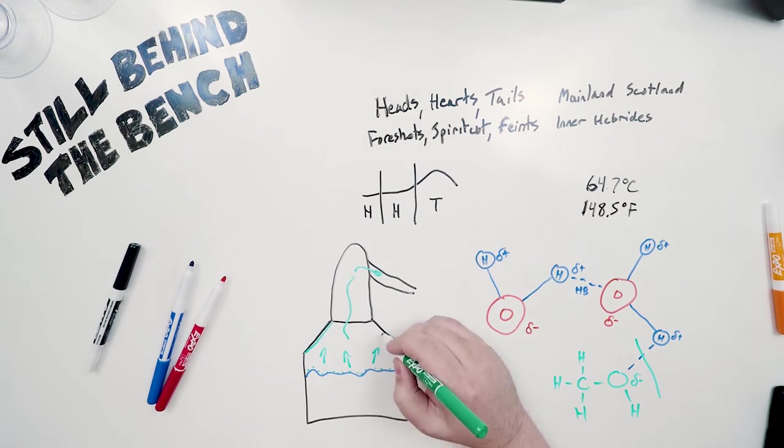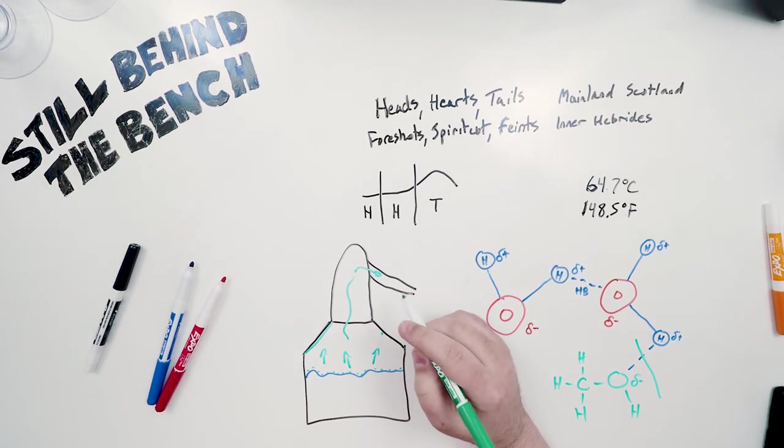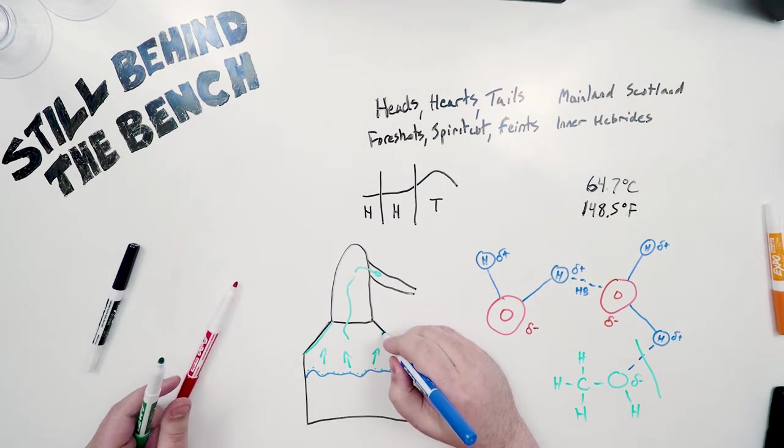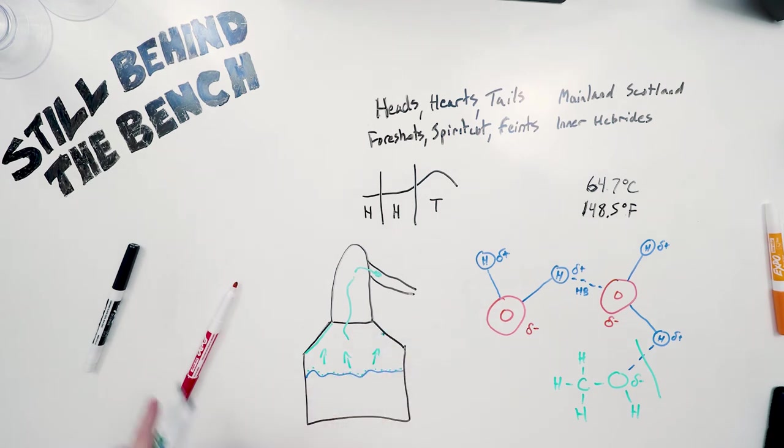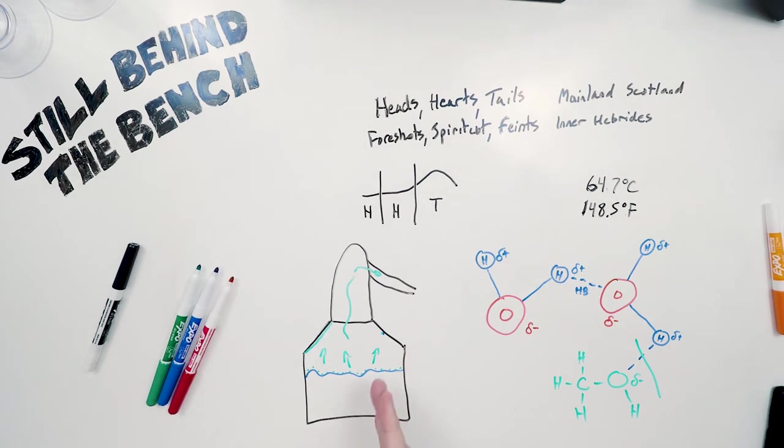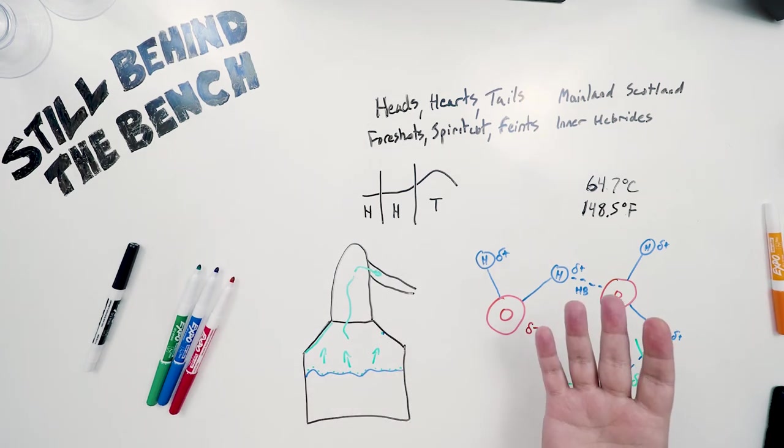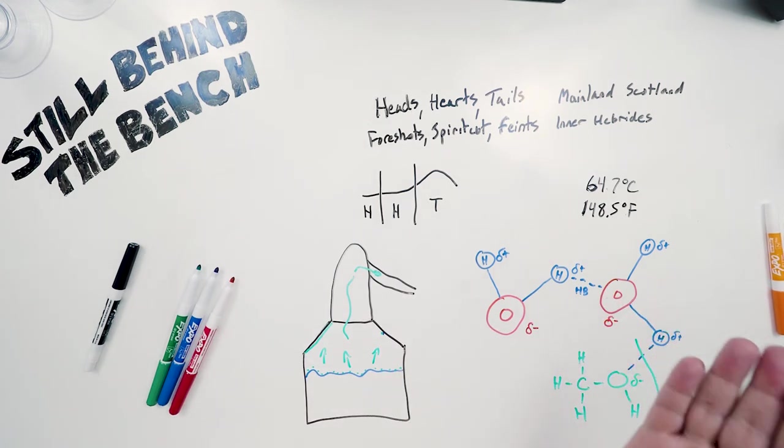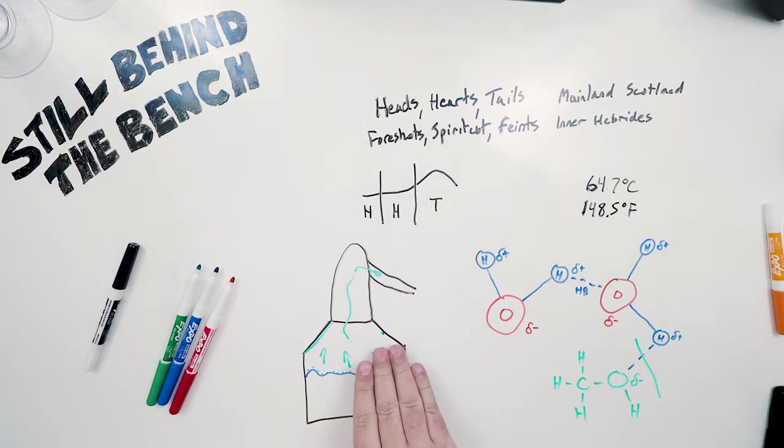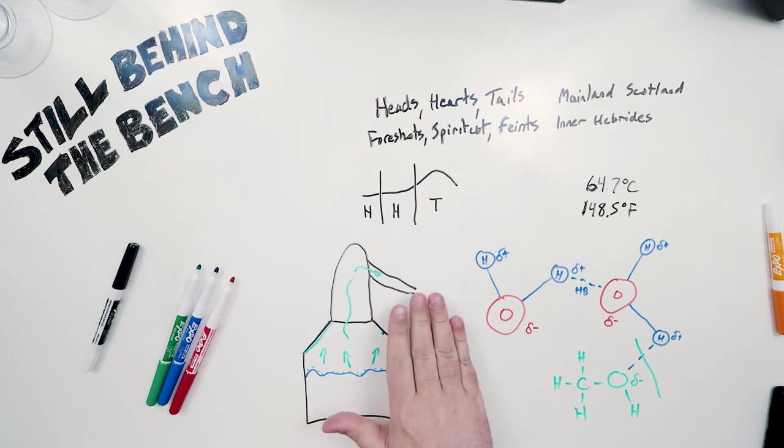Another thing that will happen is you'll have methanol and water mixing on the surface of the still and a bit of passive reflux will be happening. So the vapor coming up from the liquid will have a higher concentration of methanol and I'll get into why the vapor will have a higher concentration than a liquid in another video on vapor liquid equilibriums. When this higher concentration vapor hits the surface of the still, the condensed liquid will then have the same concentration as that vapor did.